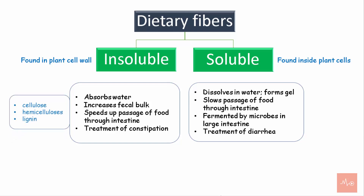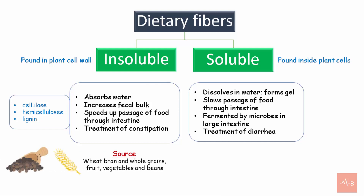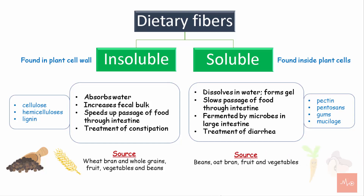Examples of insoluble fibers are cellulose, hemicellulose, and lignin. Their sources include wheat bran and whole grains, fruits, vegetables, and beans. Examples of soluble fibers are pectin, pentosans, gums, and mucilates. Their sources include beans, oat bran, fruits, and vegetables.